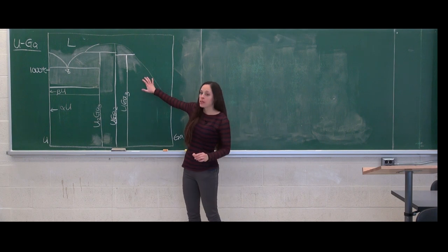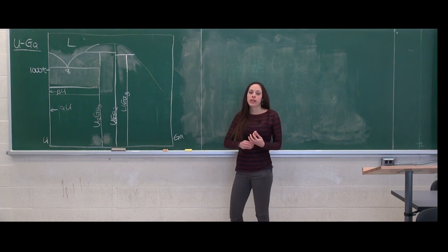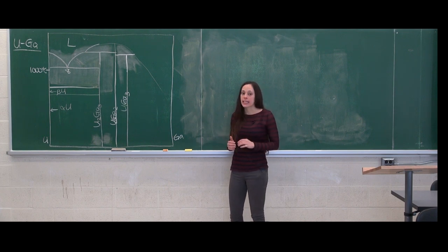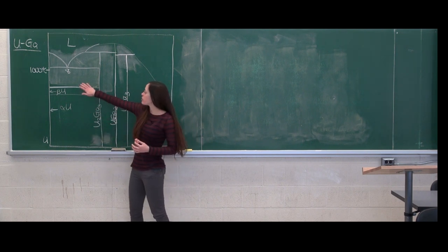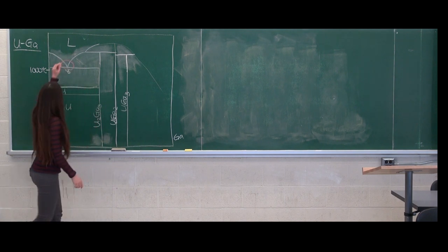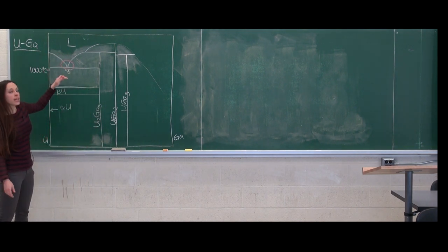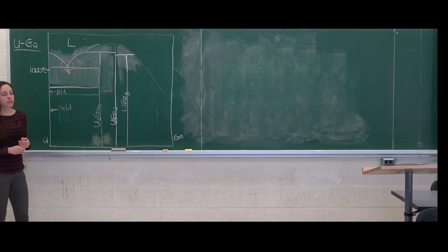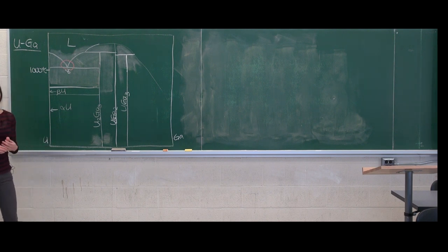So here's the uranium-gallium phase diagram. Now, if you recall, an invariant reaction occurs whenever three phases coexist simultaneously. The most obvious and apparent invariant point is here — this is your standard eutectic point, where we go from a liquid into a two-phase solid region.